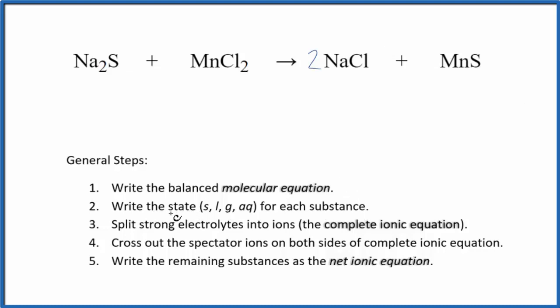Now we can write the state for each substance. Sodium compounds are very soluble, so that's going to be aqueous. It's going to dissolve and dissociate into its ions. Chloride ions, also very soluble, so AQ. Sodium chloride, of course, that'll be soluble. And then MnS, this turns out to be insoluble. That means it's going to be a solid. It won't dissolve. It'll fall to the bottom of the test tube as a precipitate. So we have the states in our reaction.